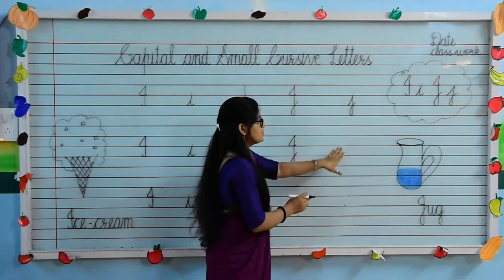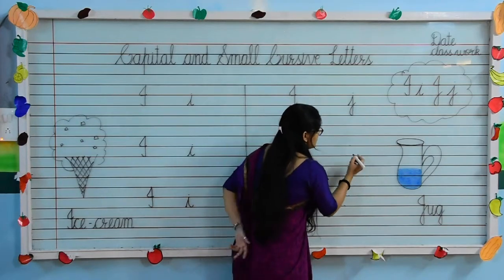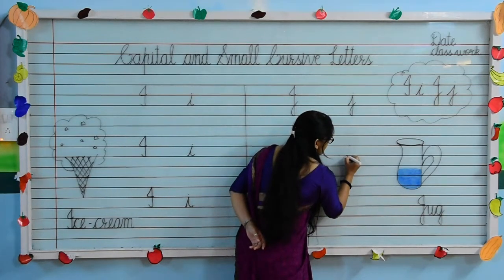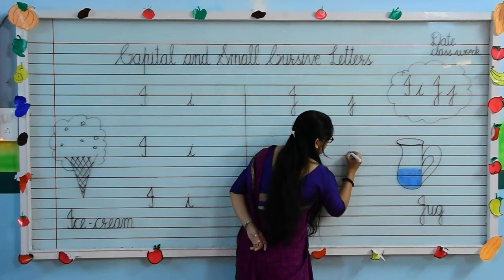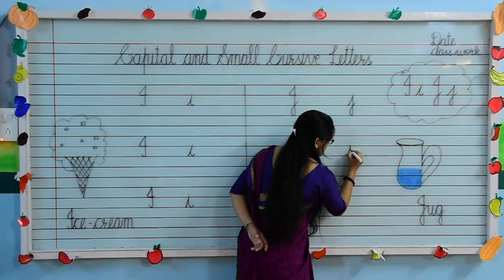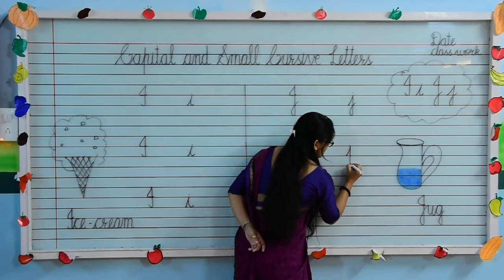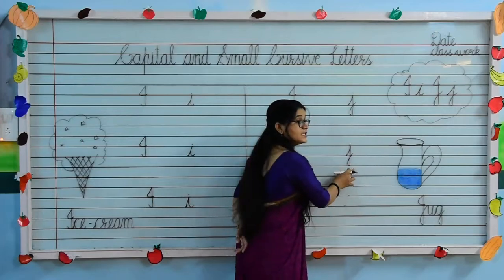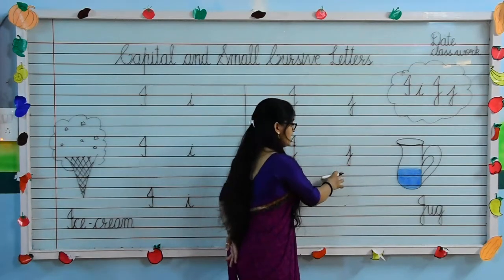Now small cursive J. Put your pencil on the third line, draw a slanting line, touch the second line and draw a standing line towards the fourth line and small loop, and dot. Small cursive J.